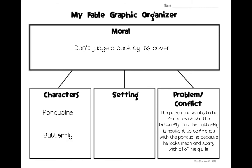In this graphic organizer we don't have to figure out how it's solved yet, but I already came up with a plan in my mind: the porcupine will somehow convince the butterfly about how nice he is, and then the butterfly will learn not to have judged the porcupine just because of how he looked — he should have talked to him first.